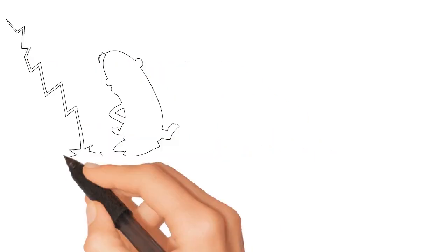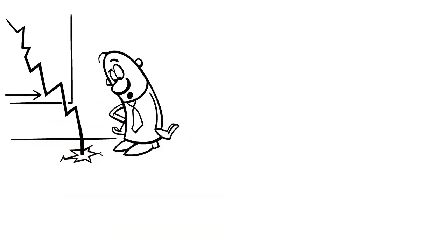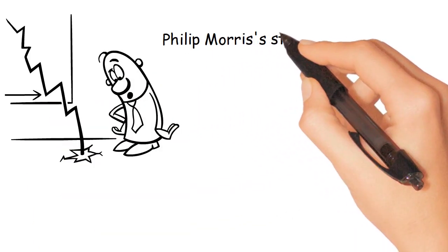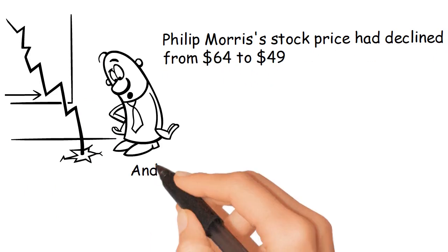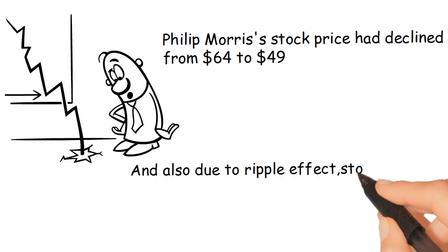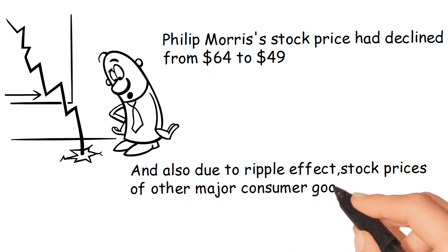The stock market reaction to this announcement was swift. Philip Morris's stock price declined from $64 to $49. And also due to ripple effect, stock prices of other major consumer goods companies also decreased.